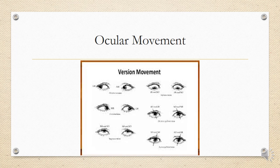Ocular movements give you the idea of which muscle is affected. For example, in lateral rectus palsy of the right eye, the patient is unable to move the right eye in that gaze direction. Similarly, in superior rectus palsy the eye cannot go upward, and in inferior rectus palsy the eye cannot depress. Version movements reveal which gaze the affected muscles act in.